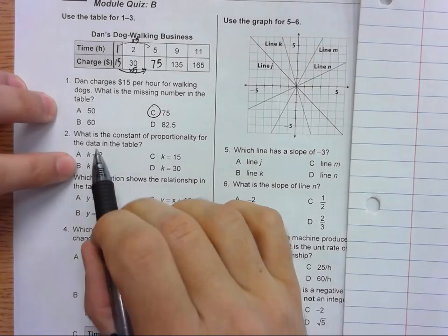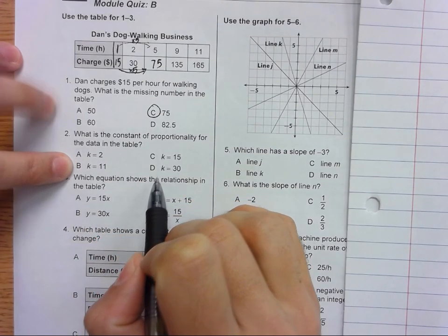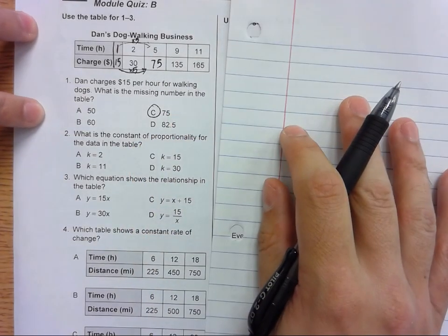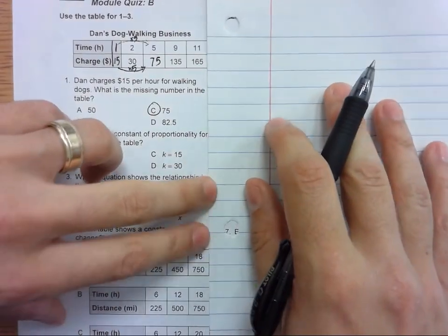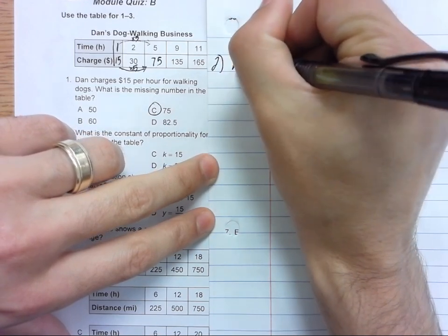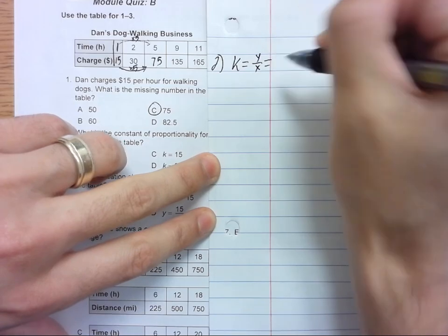What's the constant of proportionality for the data in the table? Okay, so what would our slope be, our K? To find K we're on number two. To find K, K equals Y over X. So let's pick a Y, let's pick an X.